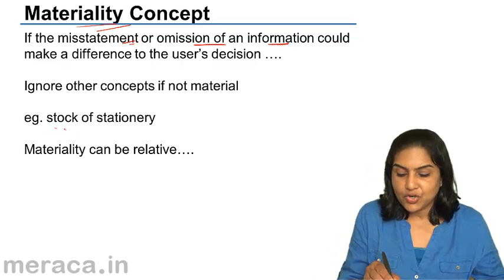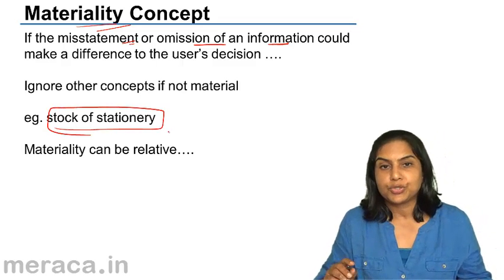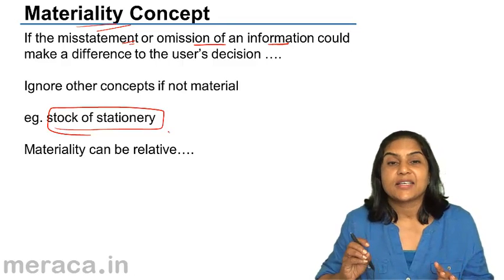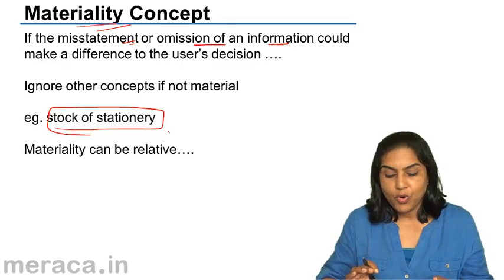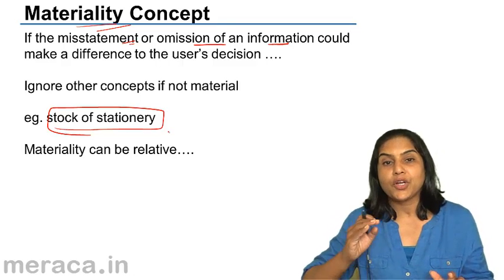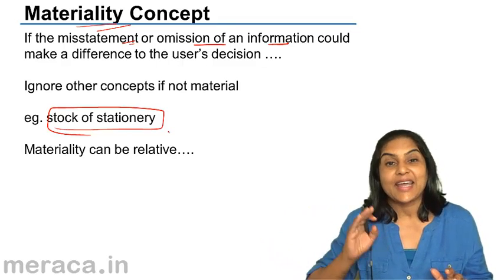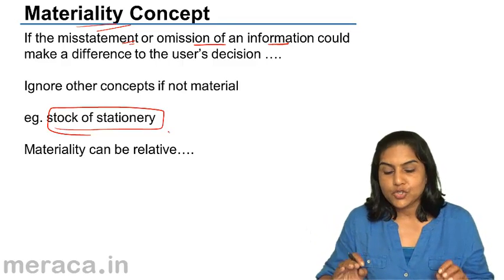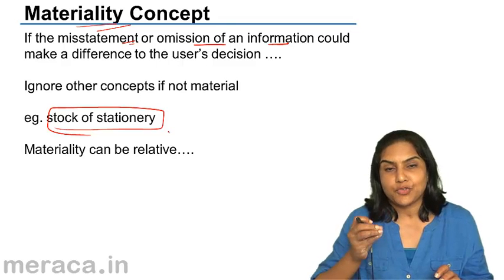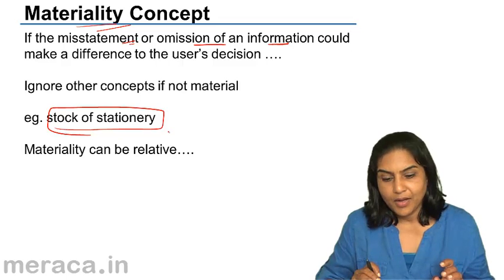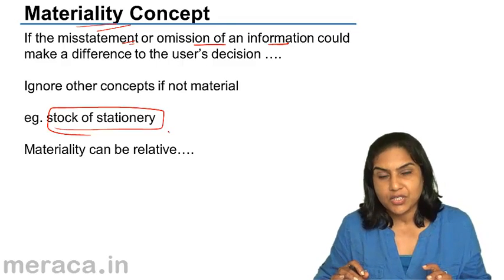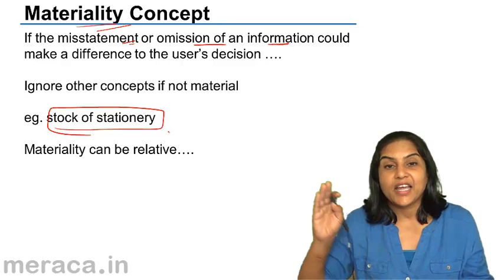An example here is a stock of stationery. Suppose we buy several sheets of paper; we normally treat this as an item of expense. Strictly speaking, an expense is when the benefit of that expenditure is received in the current year. If the benefit is not received in that year, you should treat it as an asset and carry it forward. So if some pieces of stationery remain with us at the end of the year, since they will be used only in the next year, we should strictly treat that as an asset.